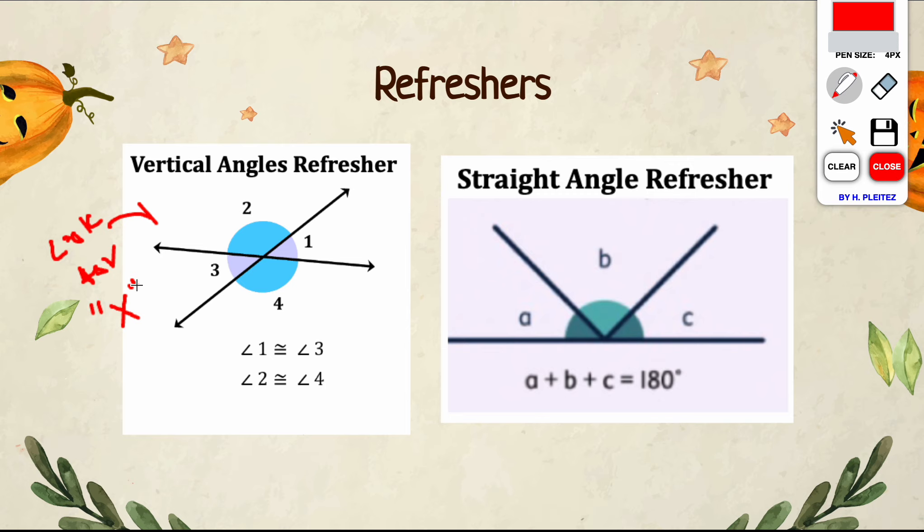A straight angle refresher - if you have any sort of straight line in your diagrams, and if that straight line is broken up into any number of pieces, you can just add up those pieces and set them equal to 180. Again, making an equation to help us find missing pieces. All of your complex diagrams are going to have both of these things, so it's good to get in the habit of finding those.